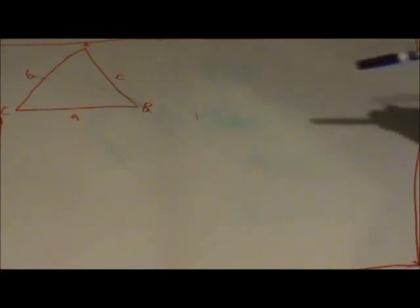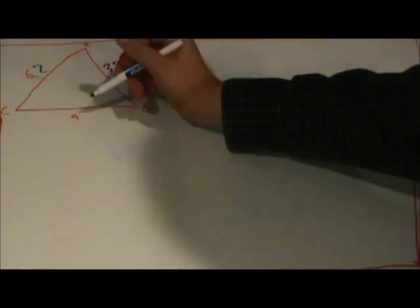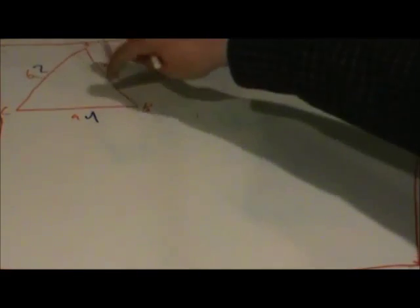So this triangle will be our guitar stand, and the side lengths are 2 feet, 3.5 feet, and 4 feet. Now we need to find the angle measures inside the guitar stand.